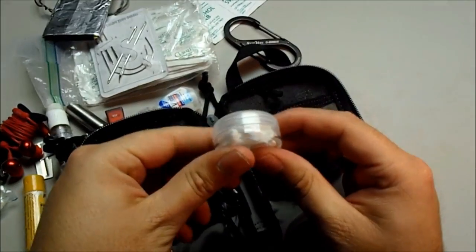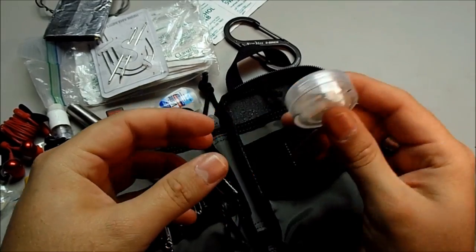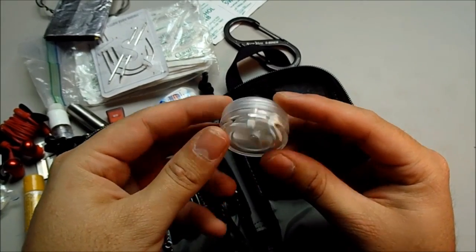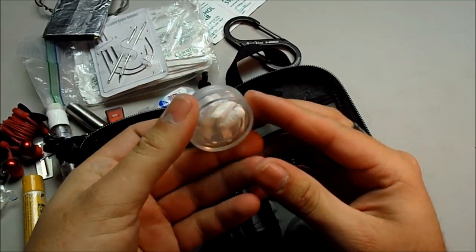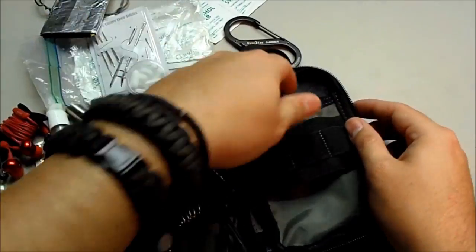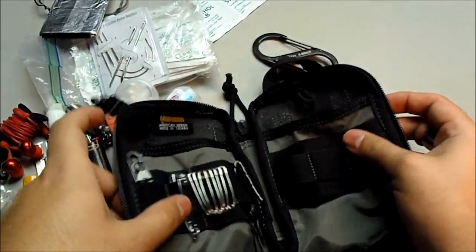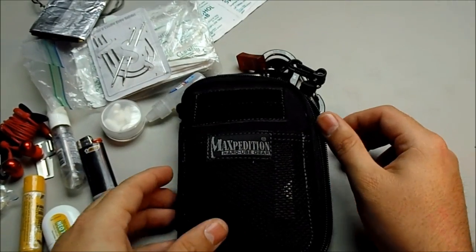And down in the bottom, got some Tylenol. And usually I keep this full. I think I use some of this, but usually I keep it full so that it doesn't rattle. Just a nice little container of it. And I think that's everything for the Maxpedition pouch.